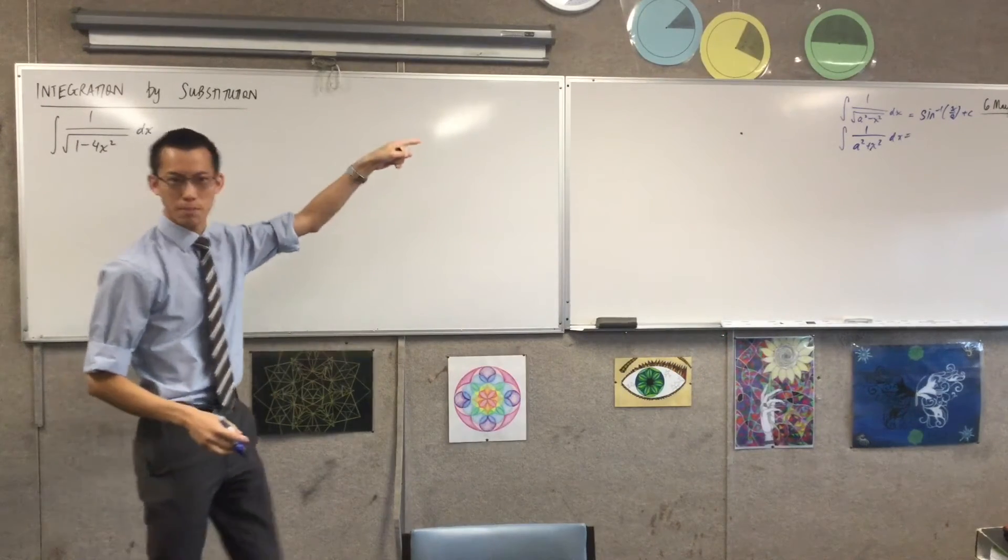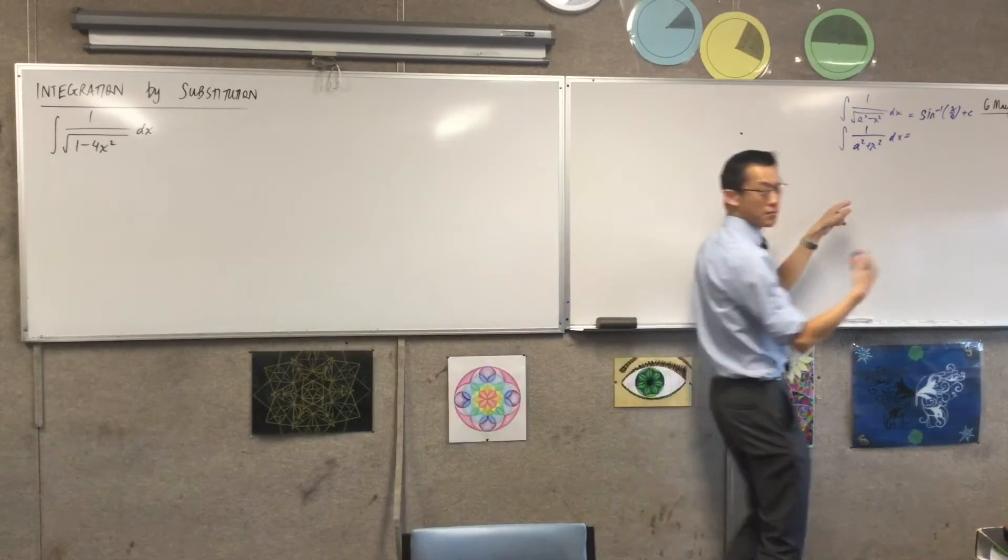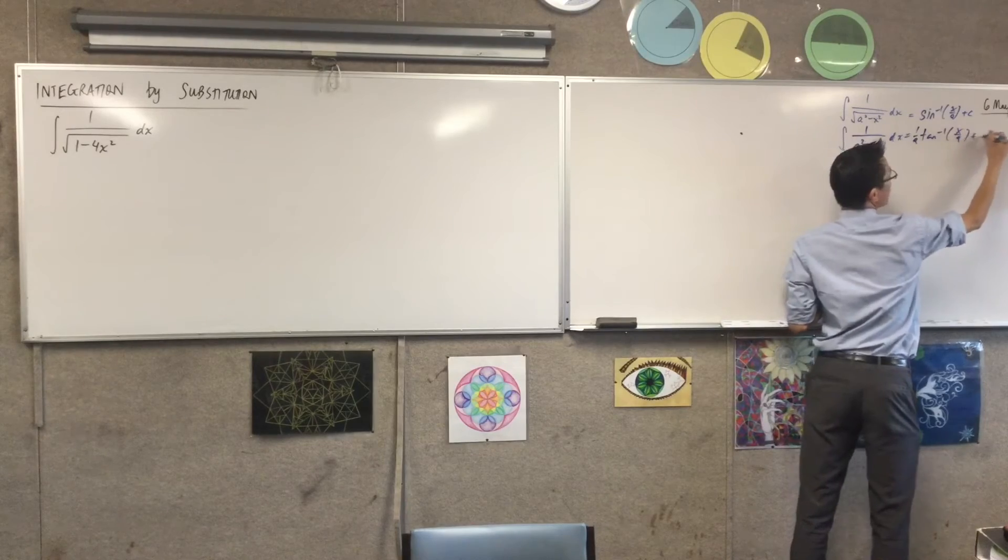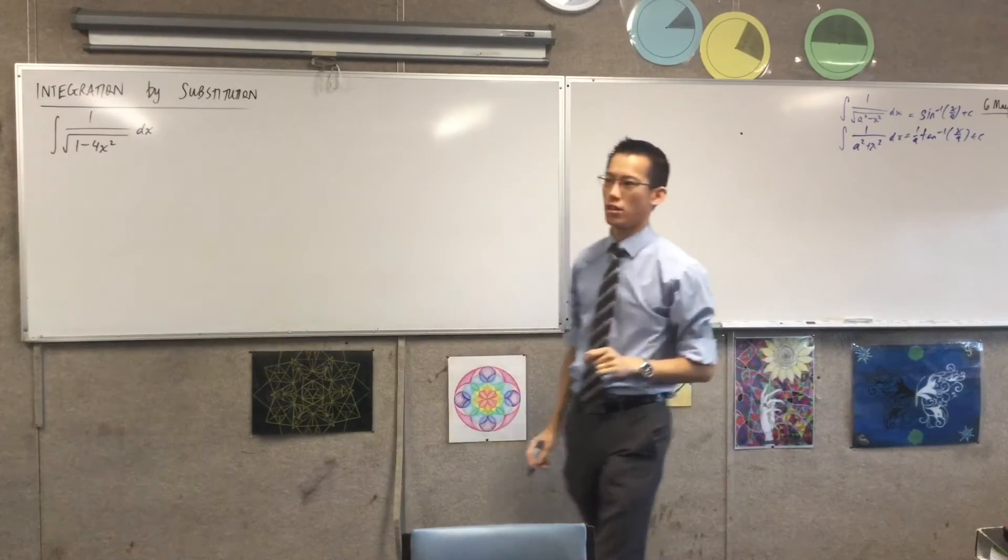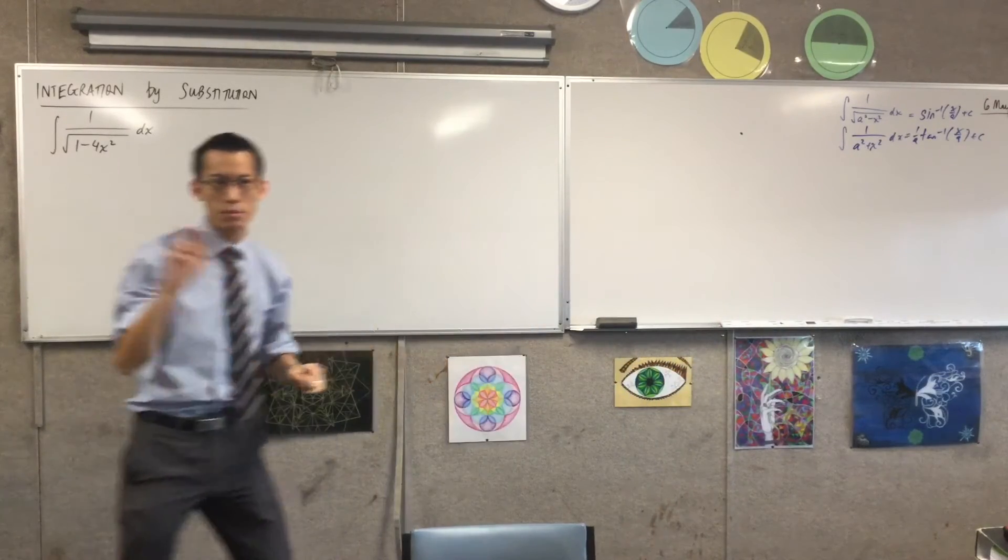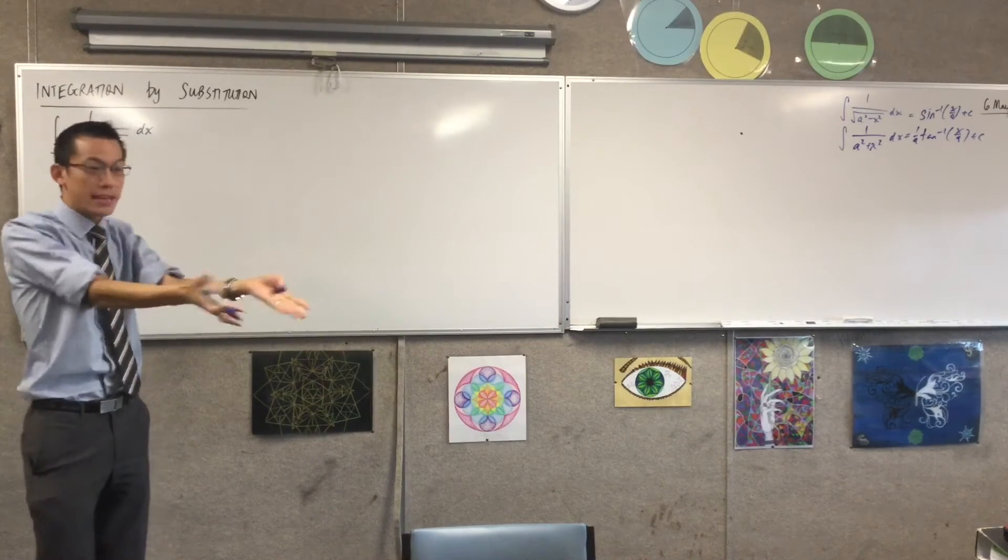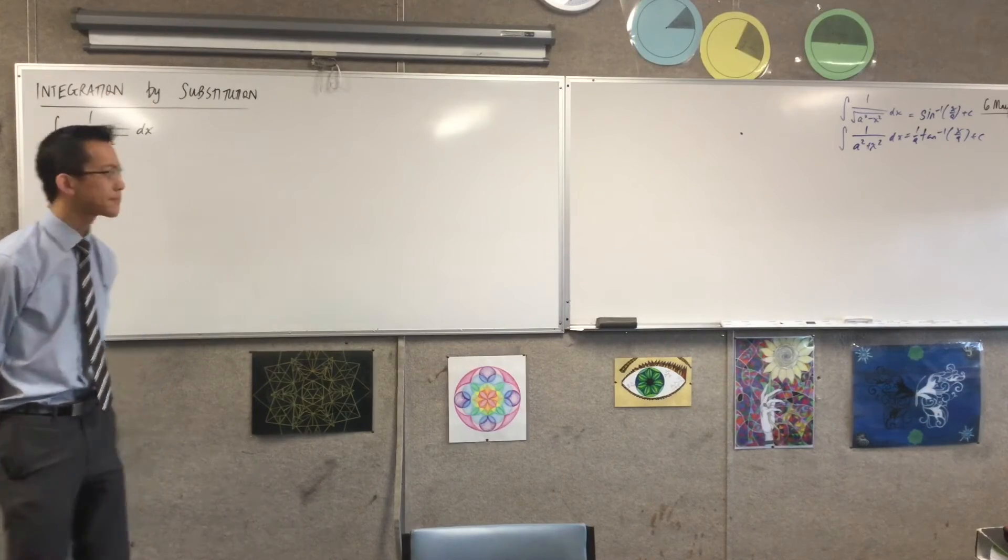Whereas when you're doing the bottom one, it's tan inverse. One over a tan inverse. And the reason why is because what identity did we take advantage of in this case? One plus tan squared is equal to? Sec squared. Sec squared, which by itself is the derivative of tan, so that's why we didn't need to appeal to any square root.